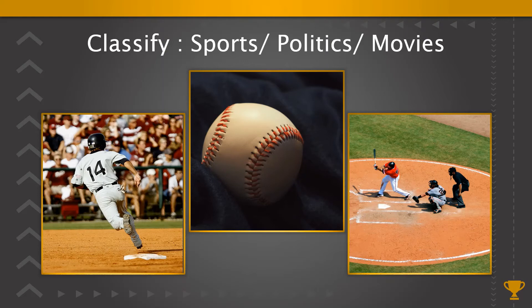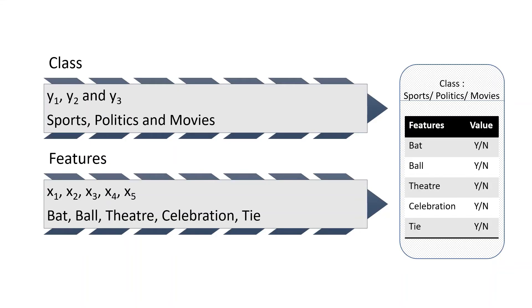To understand and calculate the various parts of the formula, let us take an example. Assume you are given an image and asked to classify it as sports, politics, or movies. The training set has five features: bat, ball, theater, celebration, and tie, and the possible values for each feature are yes or no. The classes sports, politics, and movies are given by y1, y2, and y3. The features bat, ball, theater, celebration, and tie are given by x1, x2, x3, x4, and x5.